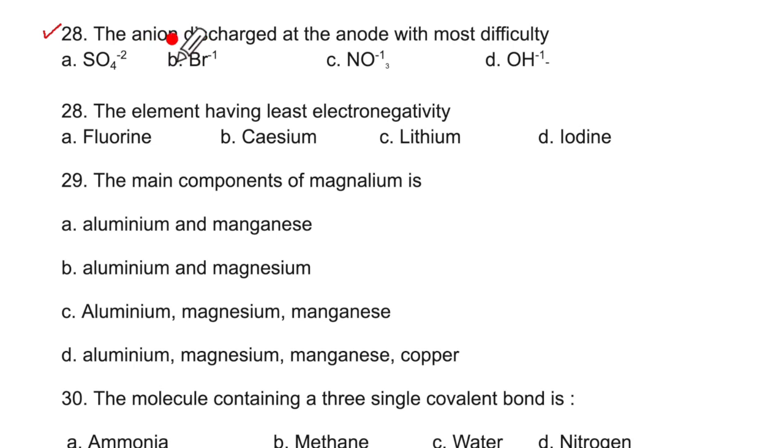The anion discharged at the anode with most difficulty. Remember your EC series is SO4 2 minus then NO3 1 minus then Cl, Br, I and then OH. The one which will be easily discharged will be this and this will be with difficulty. So the correct option is A.